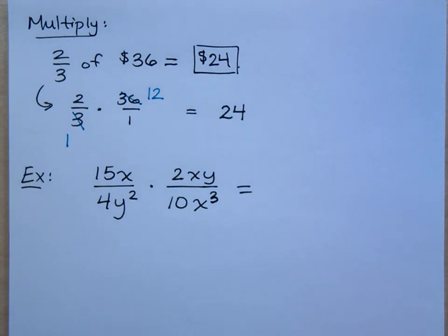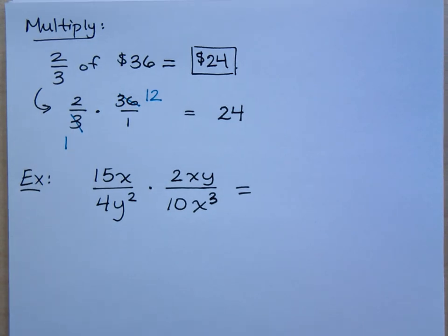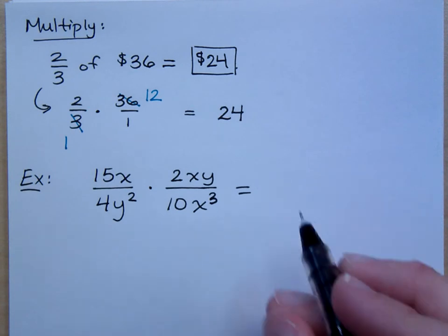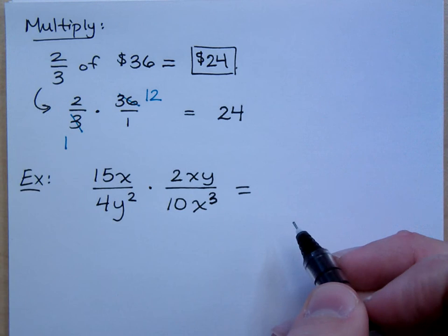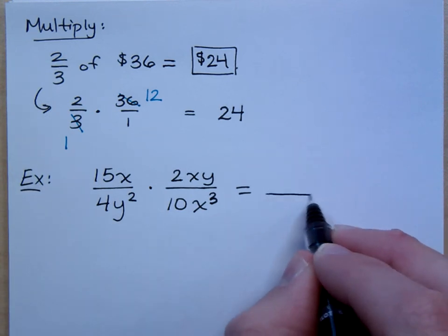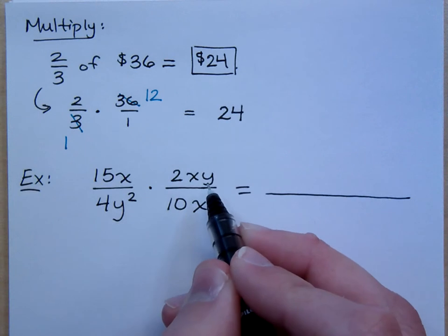So, 15X over 4Y squared times 2XY over 10X to the third. Are any of you guys scared? That's what you done heard. I know that you were scared. I'm trying to make you guys unscared.